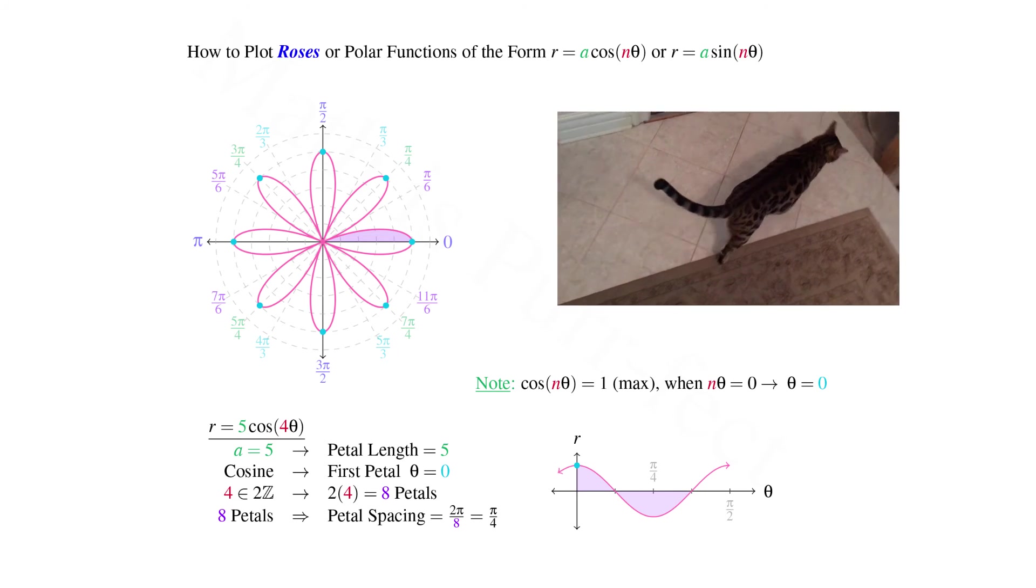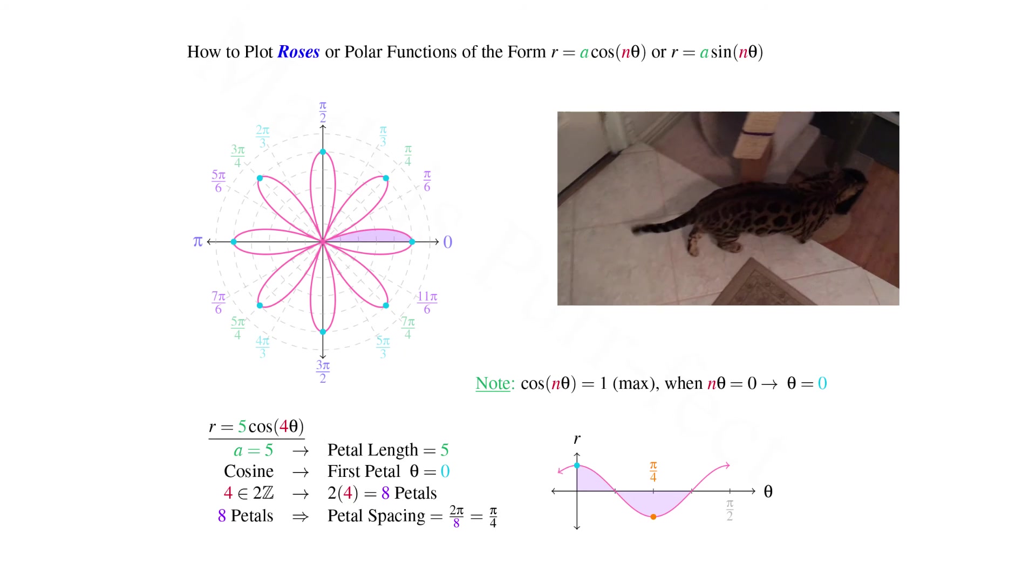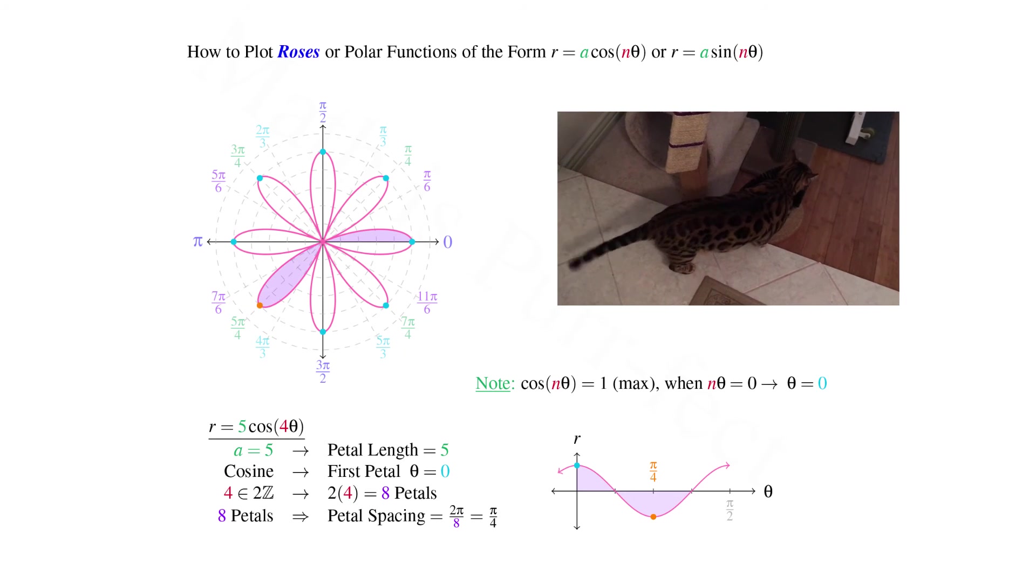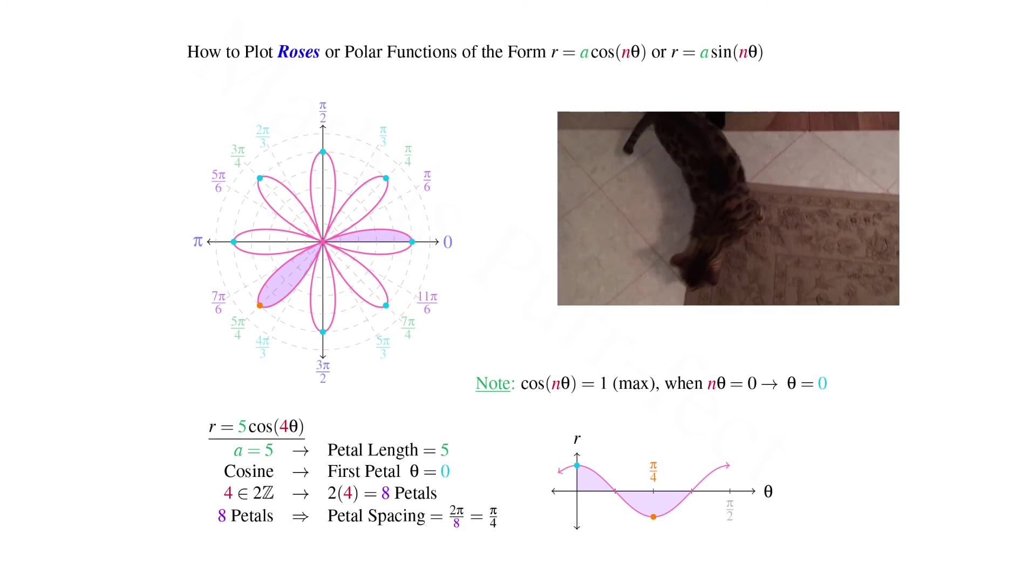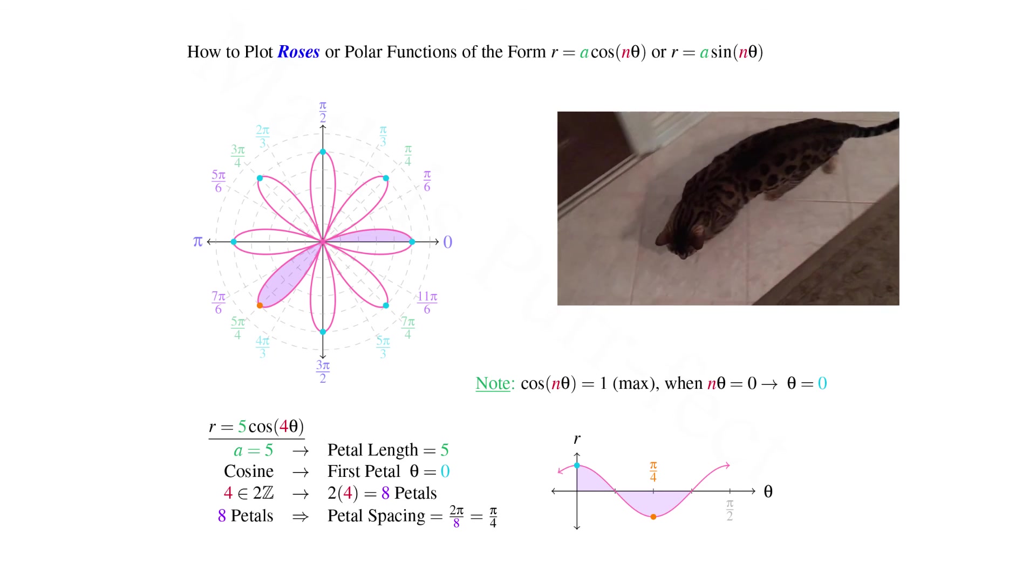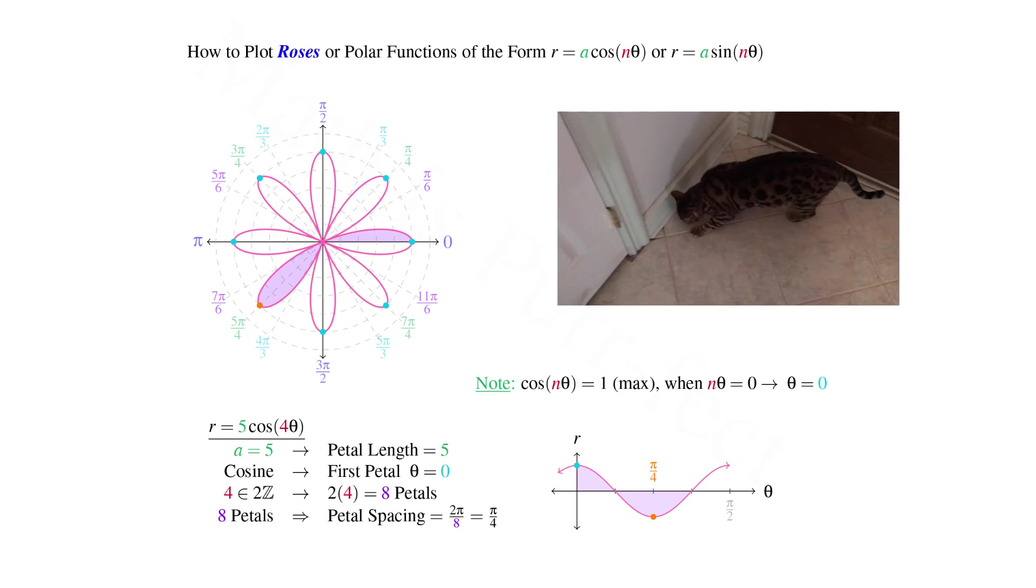Our radius is most negative at an angle of π/4. Hence, on the polar graph, our corresponding petal will point in the opposite direction to angle π/4, which of course is 5π/4.